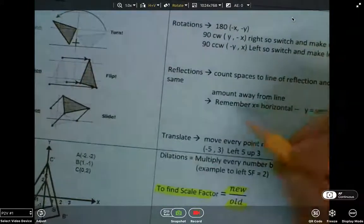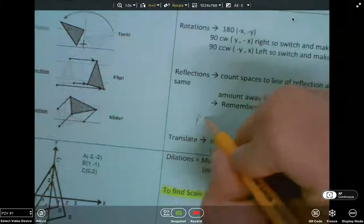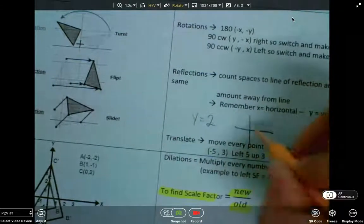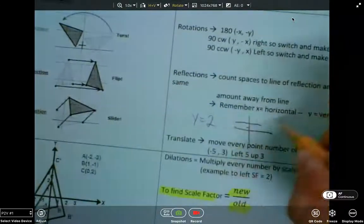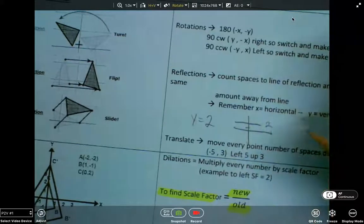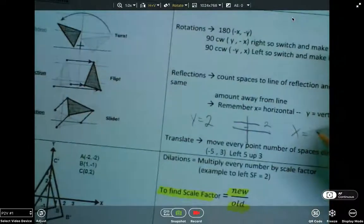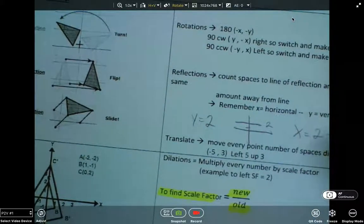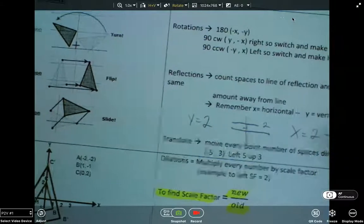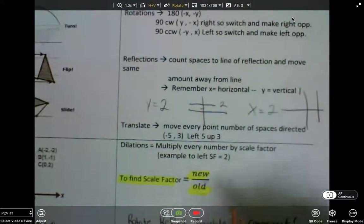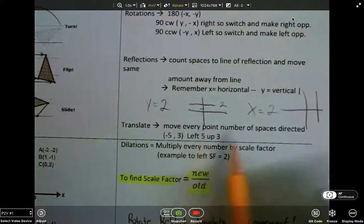Reflections, remember, if it was like y equals 2, that's a horizontal line at 2, so that would be like right there. If it was x equals 2, you're going to reflect over the vertical line there at 2. Translate, you just slide, move every point.